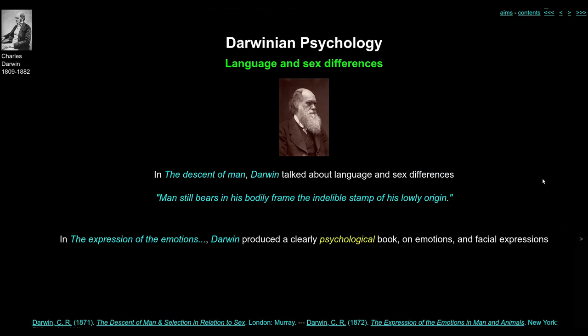In The Descent of Man, Darwin talked mostly about language and sex differences as they relate to psychology. A sentence which sums up his thoughts about how humans relate to evolutionary theory is: 'Man still bears in his bodily frame the indelible stamp of his lowly origin.' In The Expression of the Emotions, Darwin produced a clearly psychological book on emotions and facial expressions in humans across cultures. His theory was that the expression of emotions is an evolutionary adapted trait in humans.